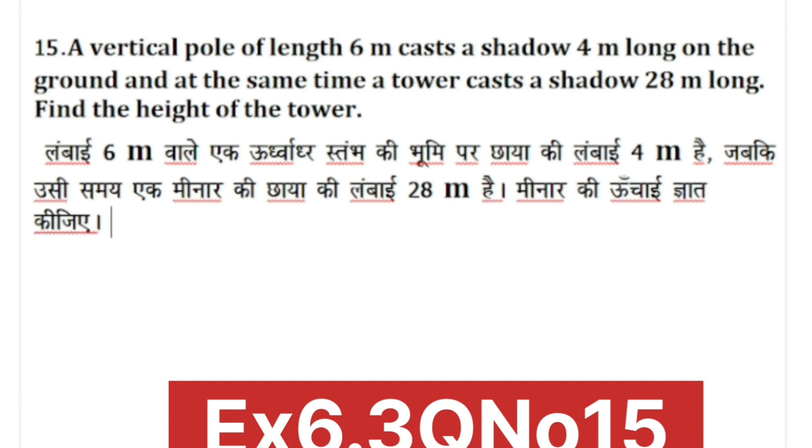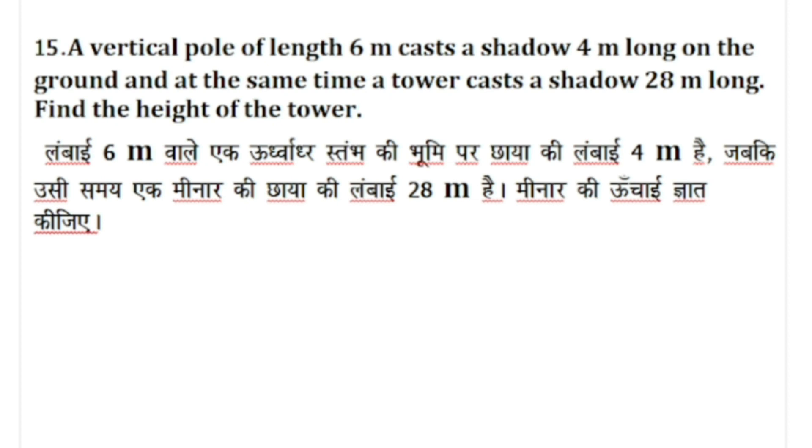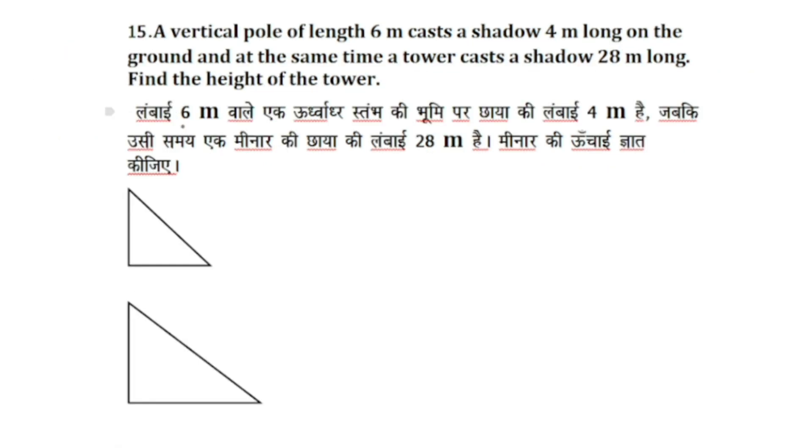The shadow of the sun creates the same angle for both. Here we have a triangle, and here we will do this triangle. Triangle ABC - suppose that we have a 6 meter long pole and its shadow is 4 meters.